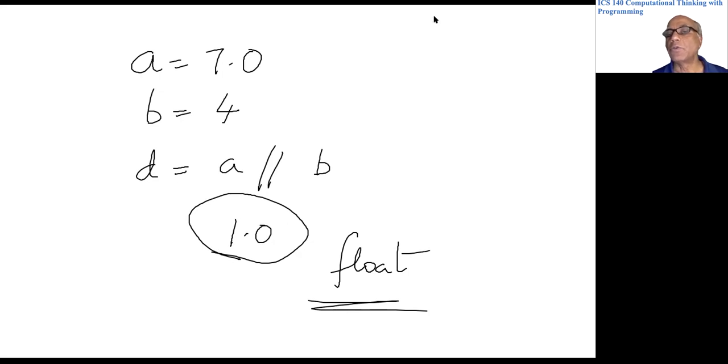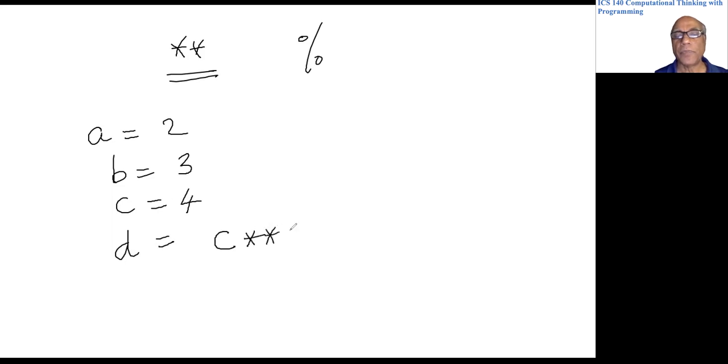Finally, not finally we have to do two more things. One is star star, the other one is percent. Let's do star star first. Suppose I write a equals two, b equals three, c equals four, and d equals c star star a star star b. What does this do?